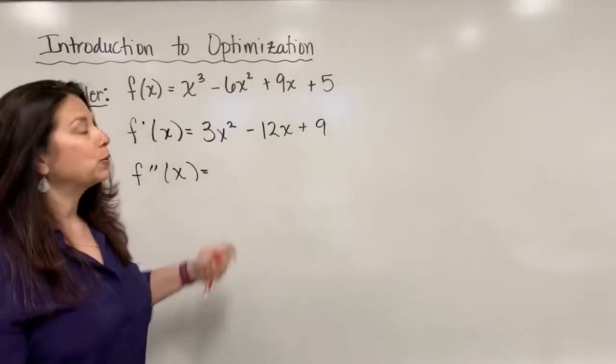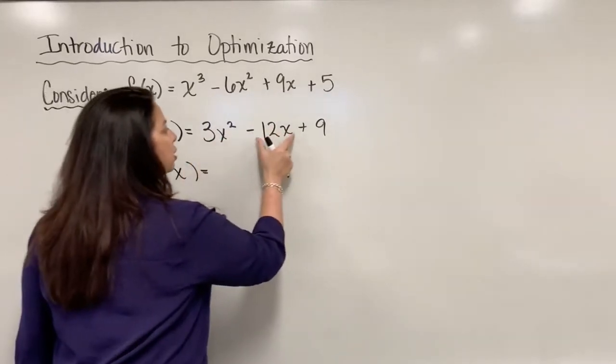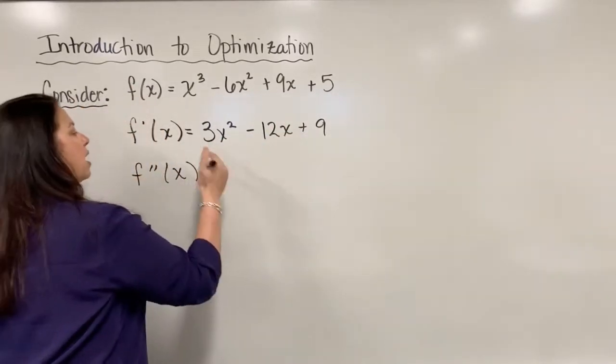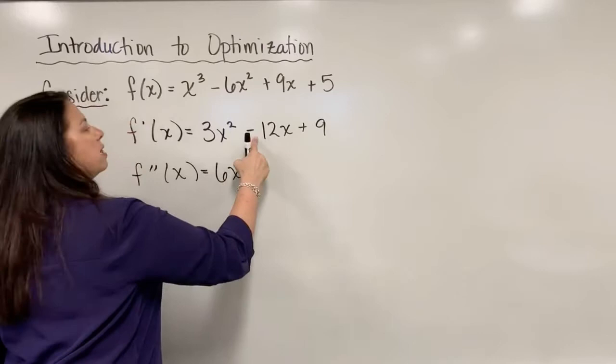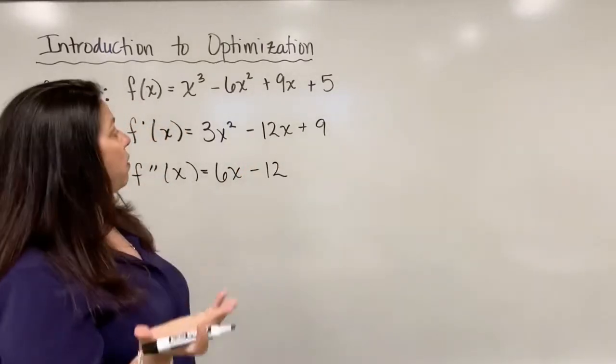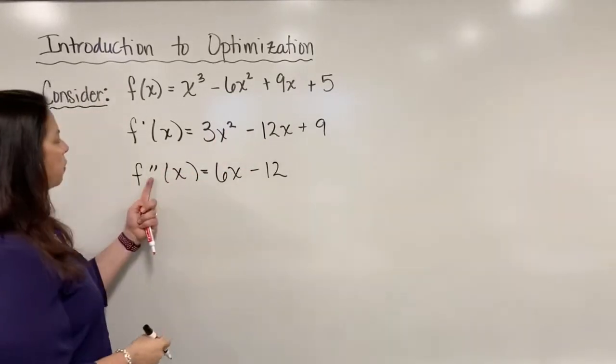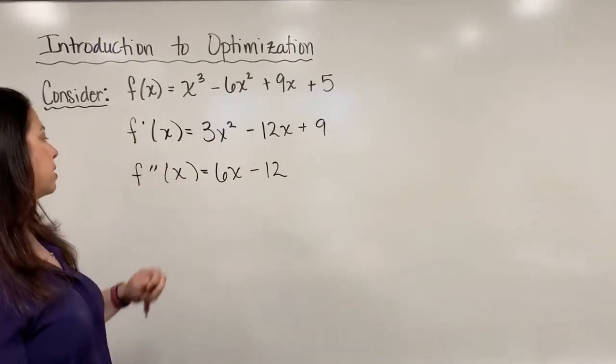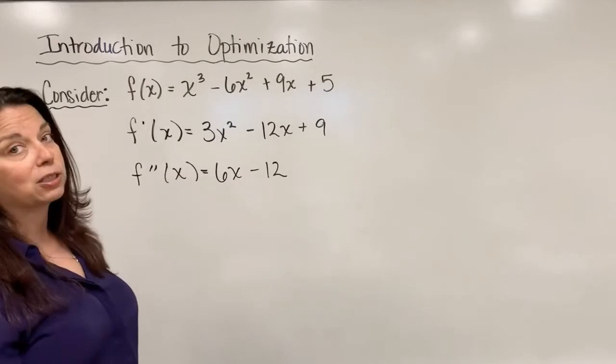I use my power rules to help me term by term figure out the derivative. I have 6x minus 12, and the derivative of 9 is just 0. So we end up with a second derivative f''(x) equal to 6x minus 12.